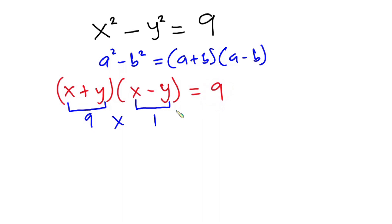Alright, so this means that x plus y is equal to 9 and then x minus y is equal to 1. Now I'm going to call this equation as equation 1, then I'll call this one equation 2.